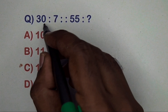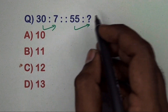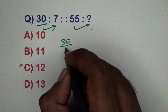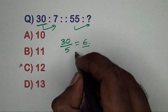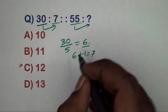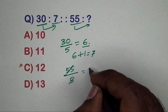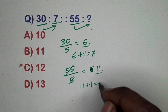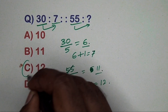Next question: 30 related to 7, 55 related to which number? Take 30 divided by 5 equals 6, then add 1 to get 7. Same way, 55 divided by 5 gives 11, then 11 plus 1 equals 12. So 12 is the correct answer.